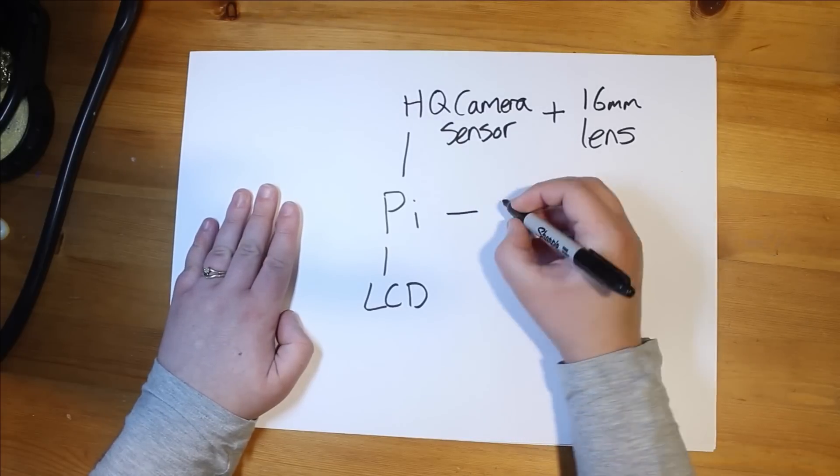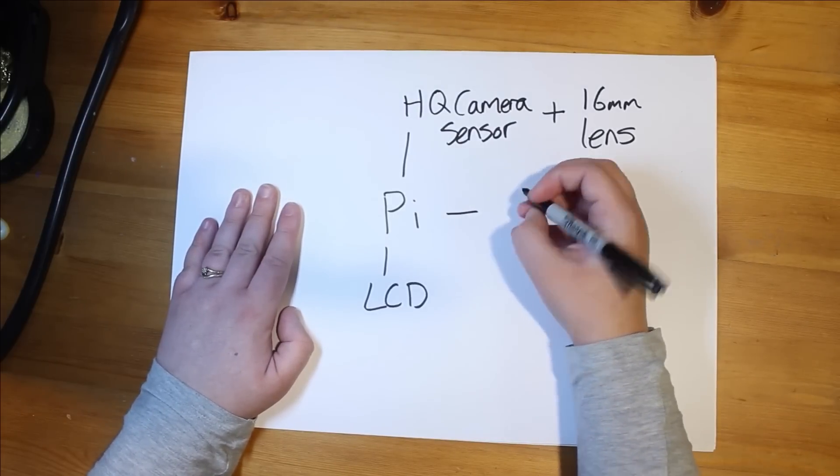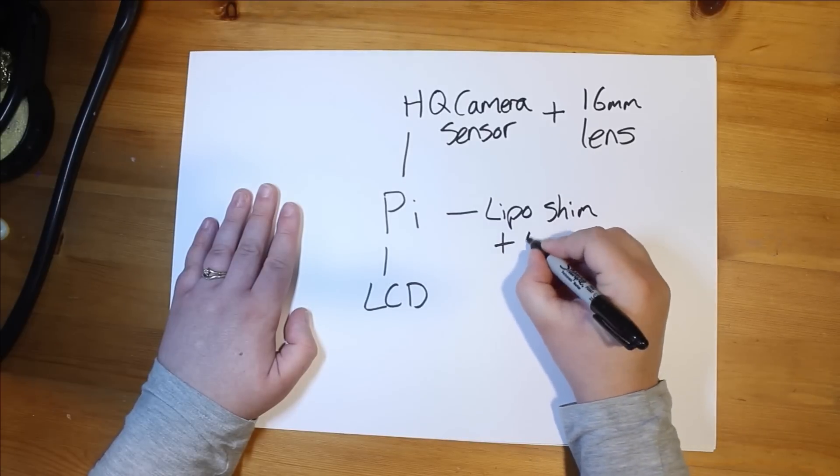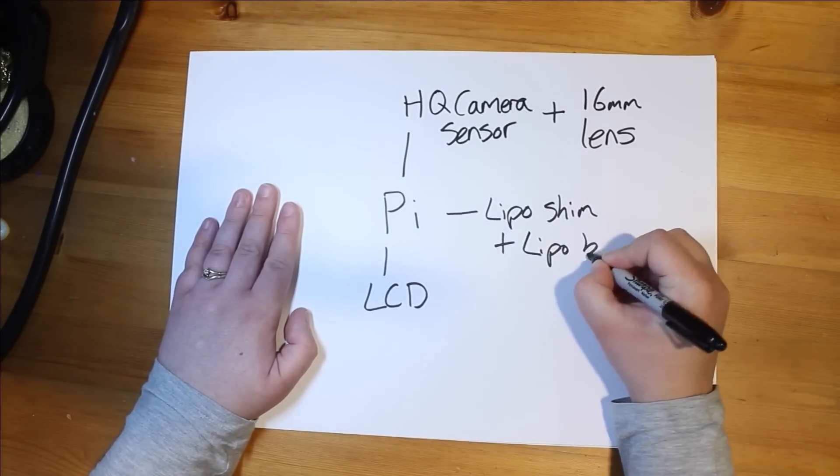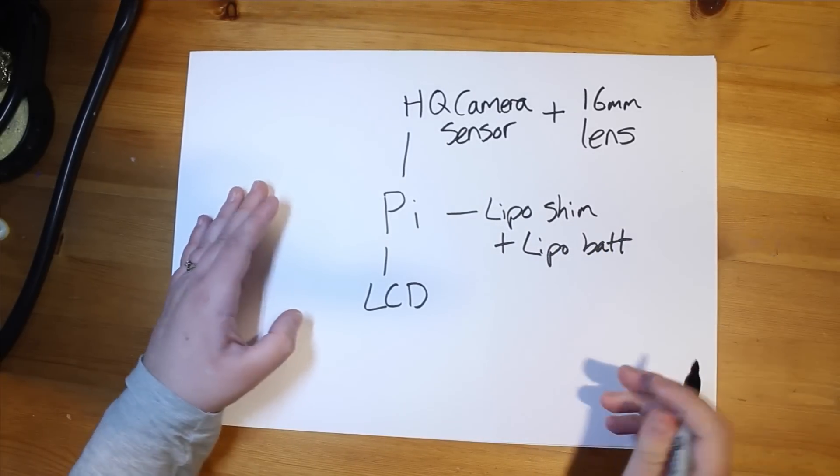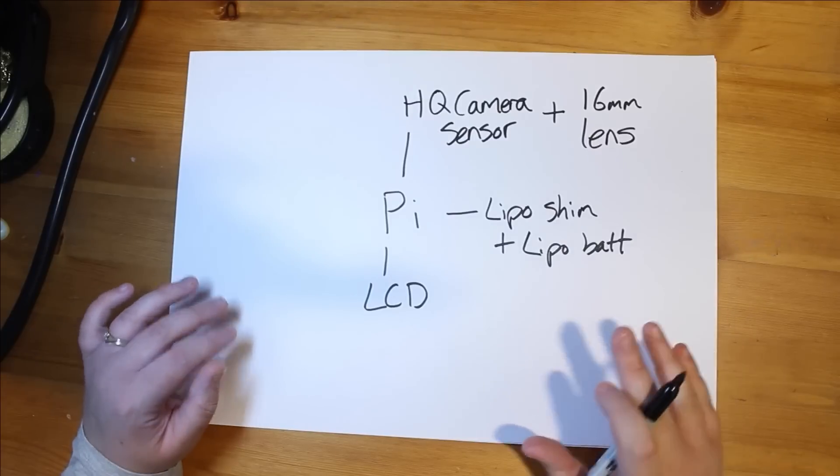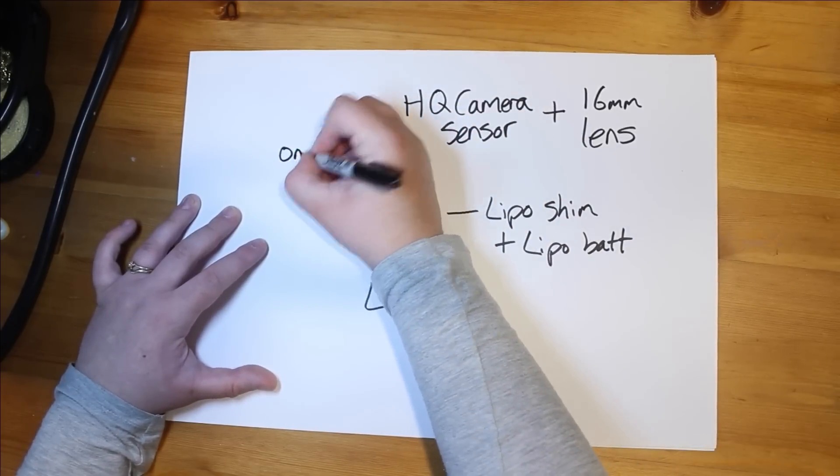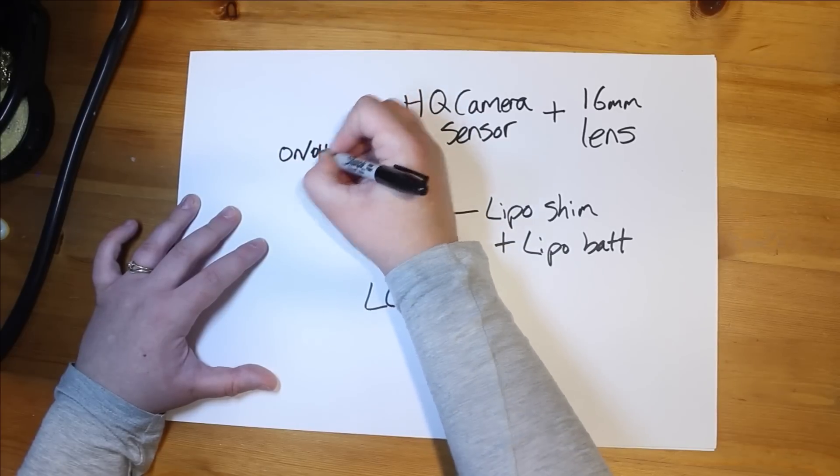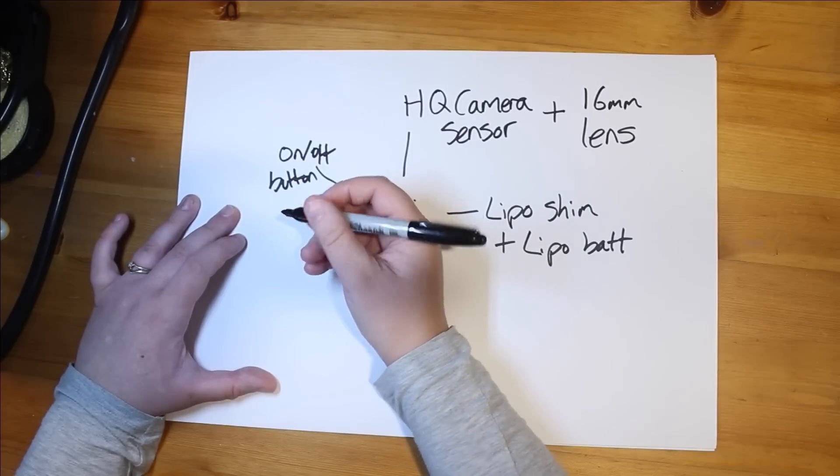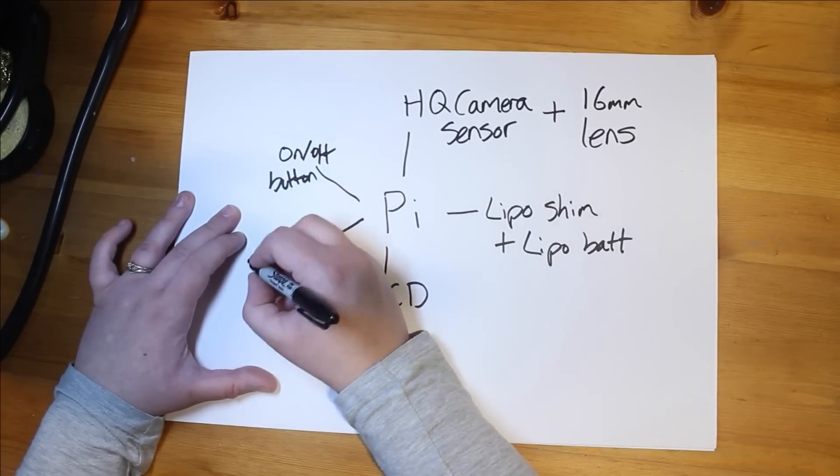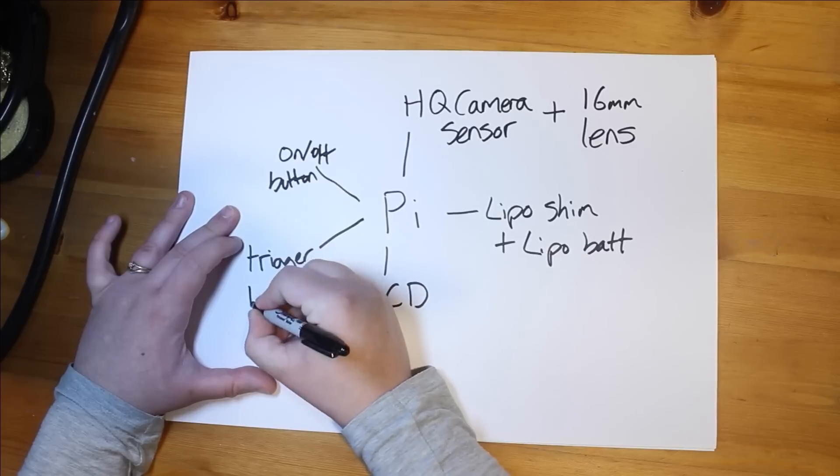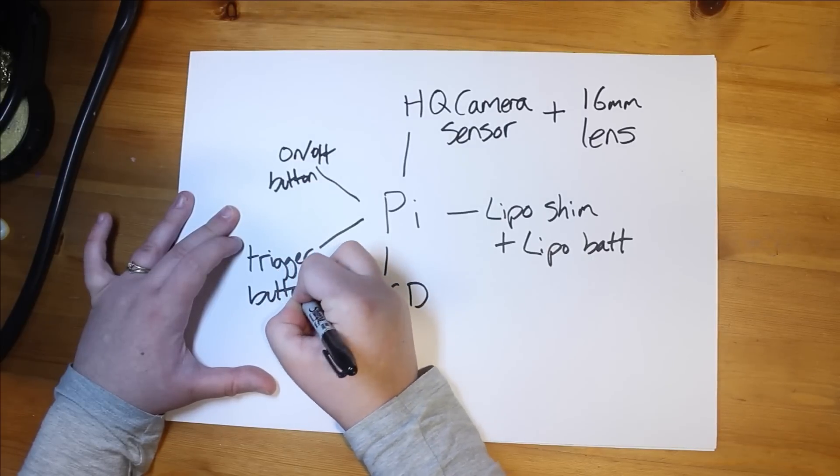We're then going to think about power. So we're going to use the LiPoSIM and a LiPo battery. So that's our power, our view, and our lens and sensor. We're also going to do an on-off button. We don't want it on all the time. And I'm going to need a button to take the picture. So let's call that a trigger button. We're going to use all those components to make our camera.